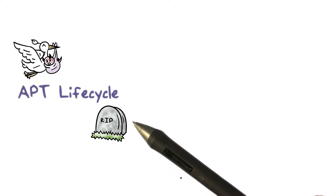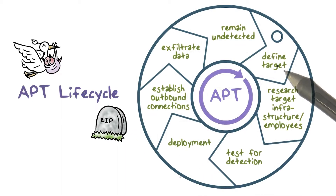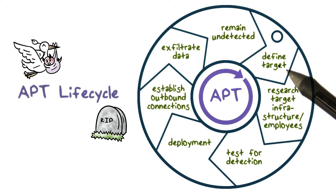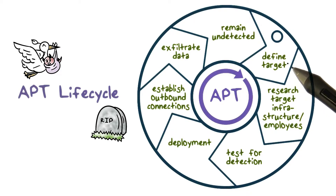Let's take a look at the lifecycle of APT. It starts by identifying the attack target. For example, the target can be an automobile or aerospace company.